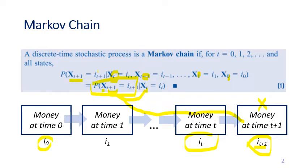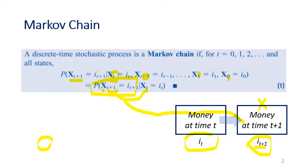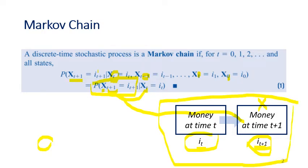However, if you believe that the amount of money you have follows a Markov chain, you only need to consider just one time step before. So you only need to know that the previous time you had i(t) dollars, and then you want to know the probability that at the next time step you have i(t+1) dollars. This is what it means to model the problem as a Markov chain — you only look at one time step before.